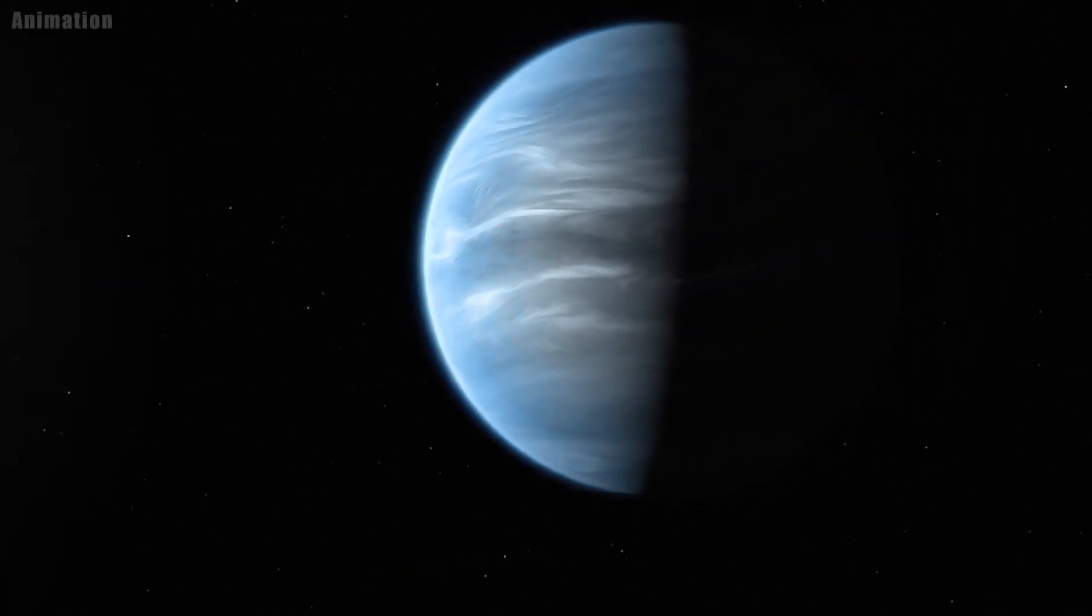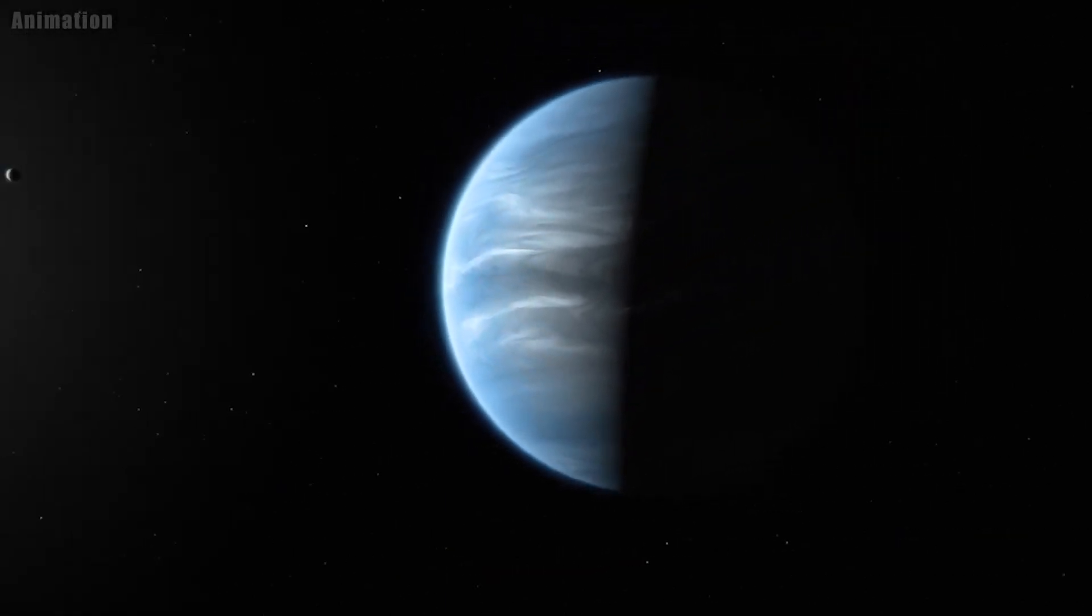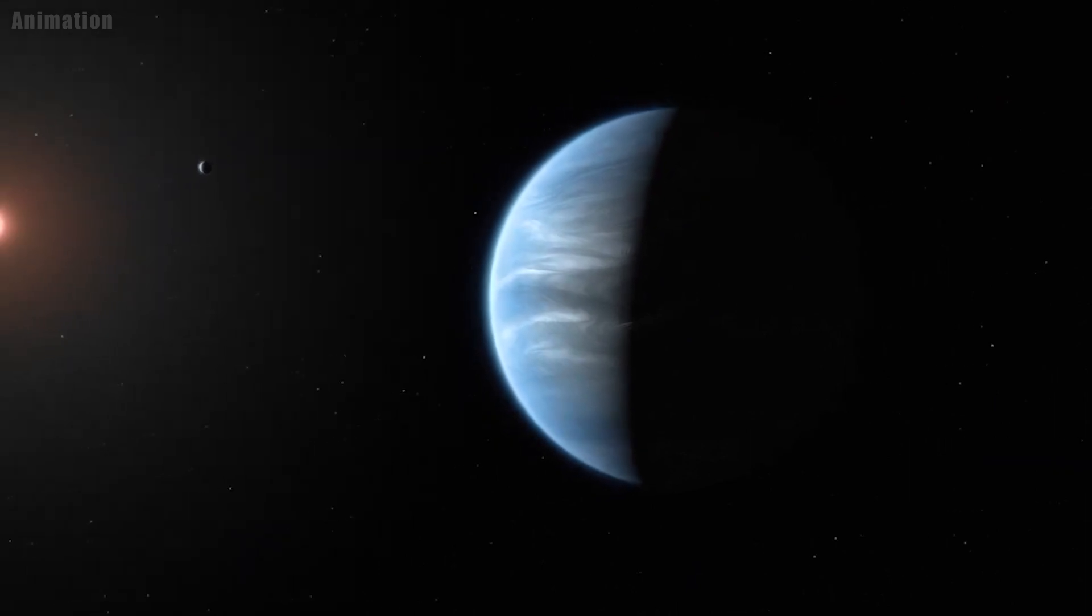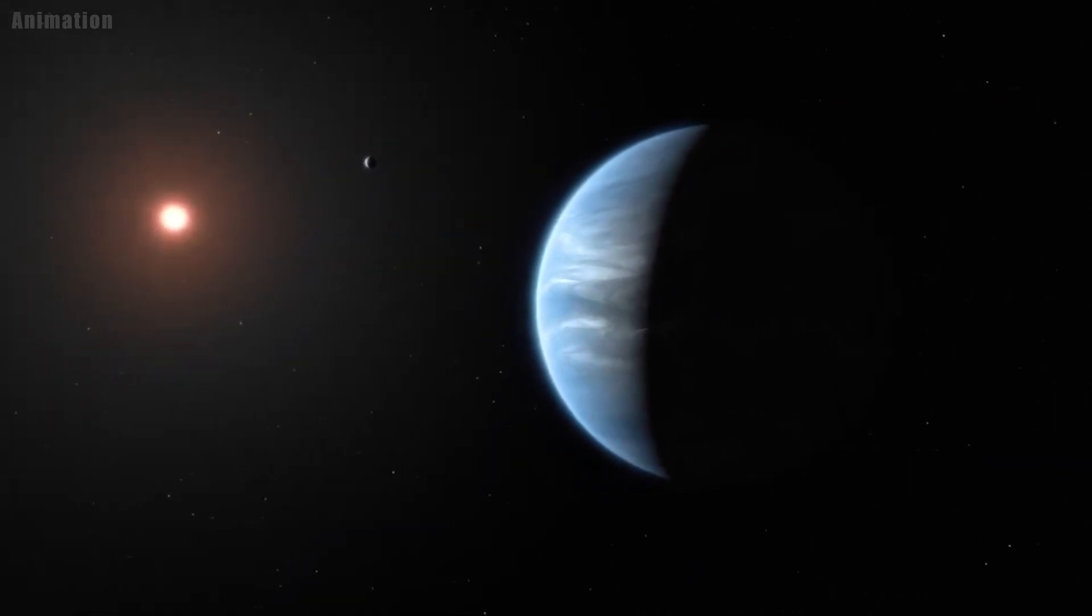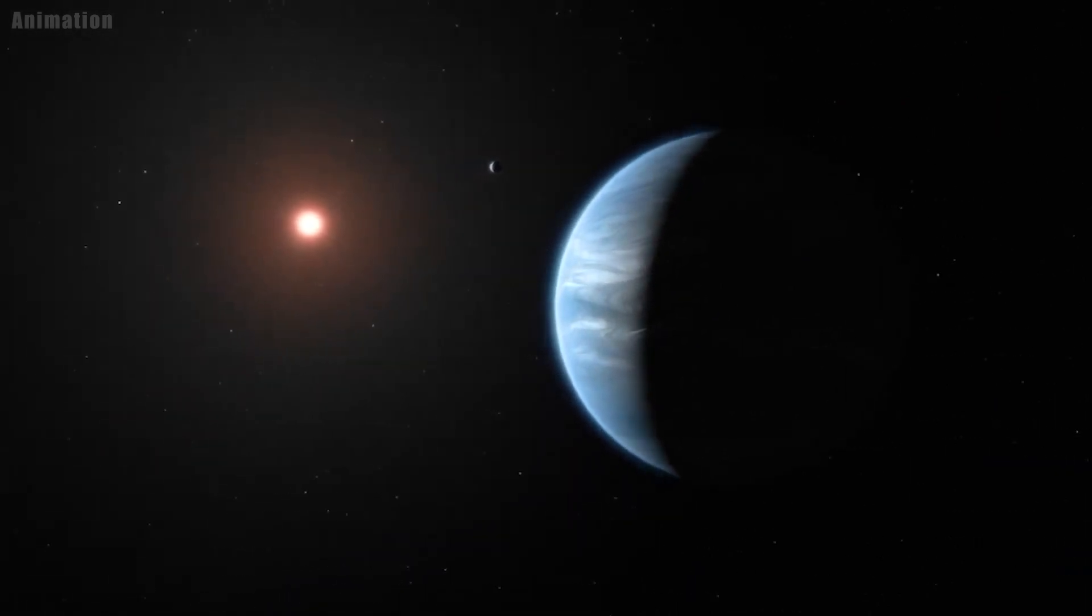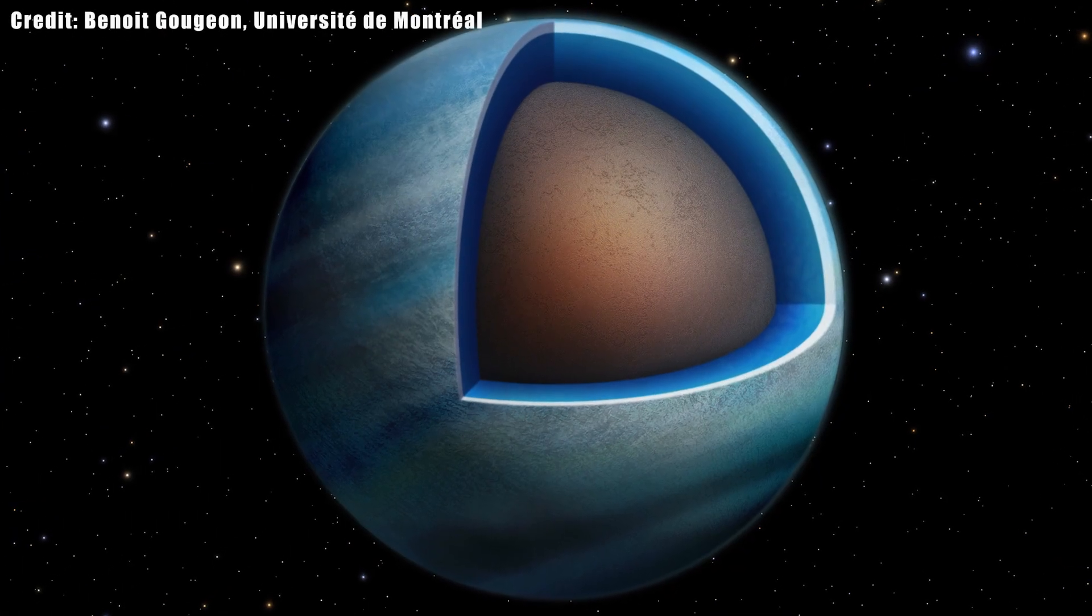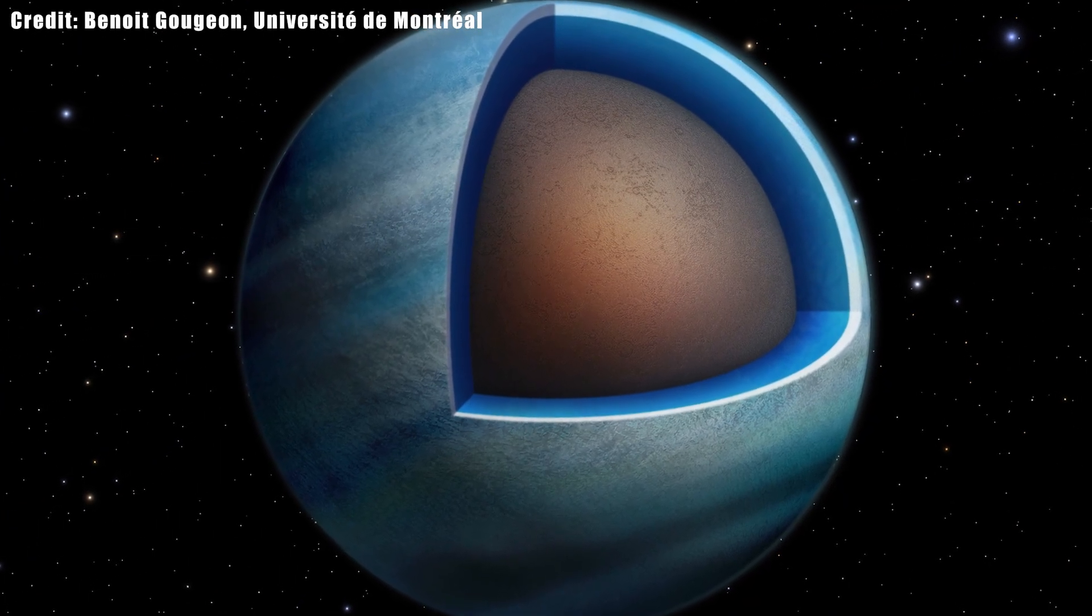Using data from NASA's Hubble and Spitzer Space Telescopes, astronomers have found evidence that two exoplanets orbiting a star 218 light-years away are water worlds, where water makes up a large fraction of the entire planet.